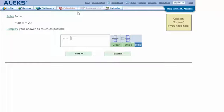Here's an example problem. Solve for W. Negative 20 equals 2W. Let's click Explain.